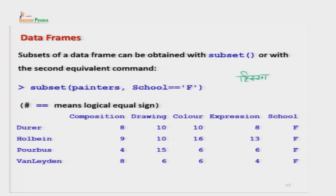जैसे कि हम अगर class में कहते हैं कि जिन students के marks 70% और 80% के बीच में आई हैं वो अपना नाम एक कागज पर लिख करके दे दें - तो यह उस class का एक subset हो गया। उसी तरीके से अगर हम कहें कि class के male students अपना नाम लिखें, या female students अपना नाम लिखें - तो यह हमारे class का subset हो गया।